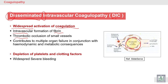The thrombotic occlusion of small blood vessels and clot formation contributes to multiple organ failure by obstructing the blood supply to organs, leading to organ failure and metabolic complications — renal failure, liver failure, heart failure, or any organ failure.